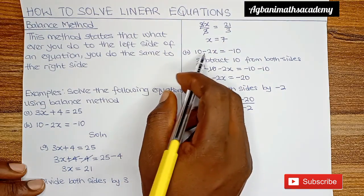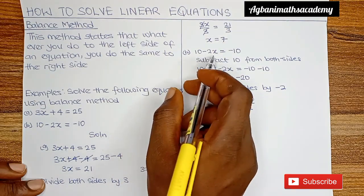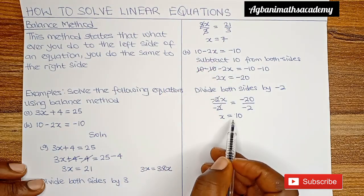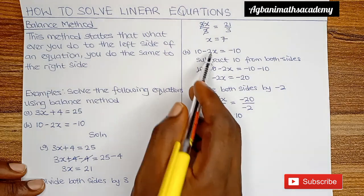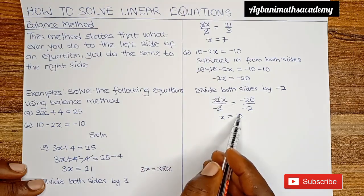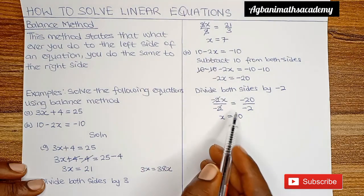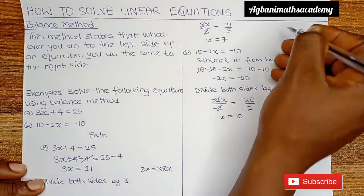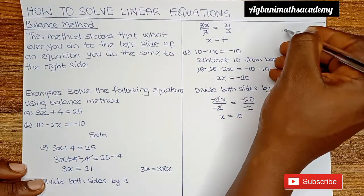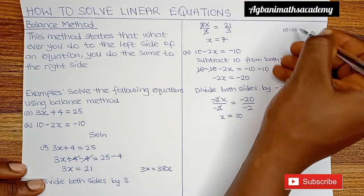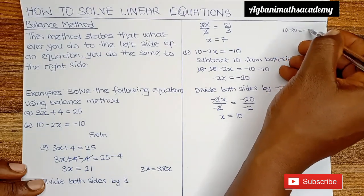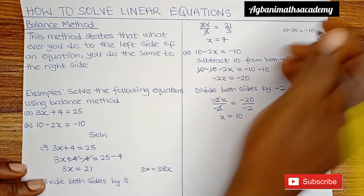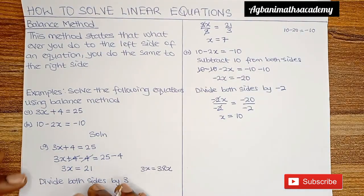Let's check if our answer is correct. We have 10 minus 2x, and x is 10. 2 multiplied by 10 gives us 20. So 10 minus 20 gives us minus 10. The answer is correct. Very simple.